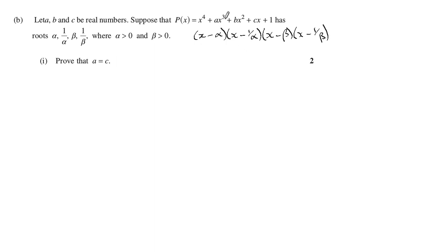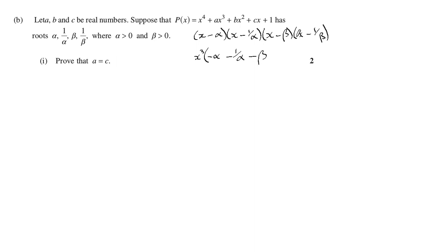To find the coefficient on x³ — because we want to know what a equals — just think about all the ways you can get three x's and one of something else. So you can have x·x·x times the (−1/β), or (−α) times x·x·x, and so on — all the different ways to get three x's and one other factor.